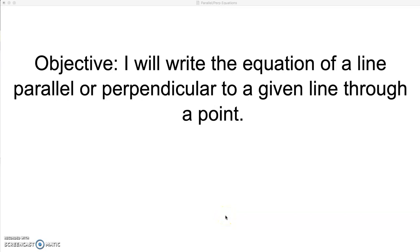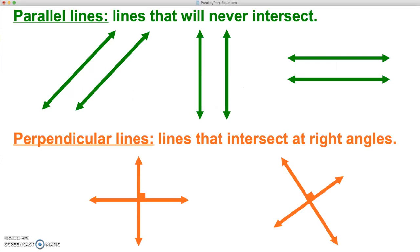In this video, we will write the equation of a parallel or perpendicular line to a given line through a point. Let's remind ourselves of the definition of parallel and perpendicular. Parallel lines are lines that will never intersect. Perpendicular lines are lines that intersect at right angles.